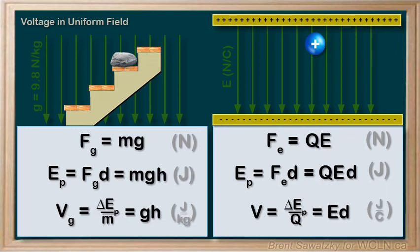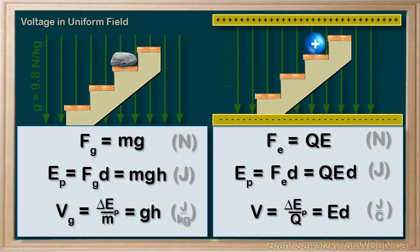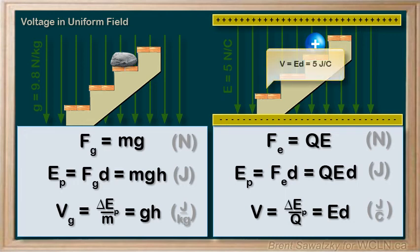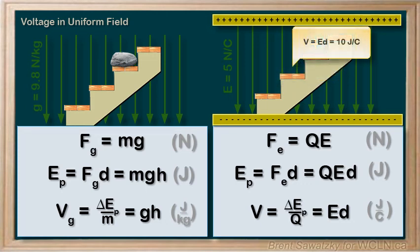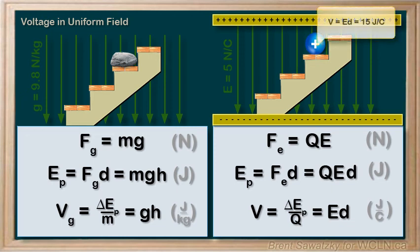Let's mark some levels or steps in our electric field. If our electric field is 5 newtons per coulomb, and the first step is 1 meter high, then it would have an electric potential or voltage of e times 1, or 5 joules per coulomb. The second step, 2 meters high, would have a voltage of e times 2, or 10 joules per coulomb. The third step, e times 3, 15 joules per coulomb, and so on.